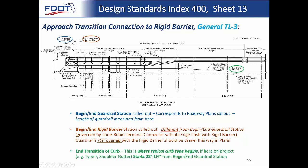Here would be the end transition of curb. At this point you could have a type F curb, shoulder gutter, or no curb at all. When we show the cross sections for Sheet 15, we'll show how all those options get handled. There are multiple options on Sheet 15.